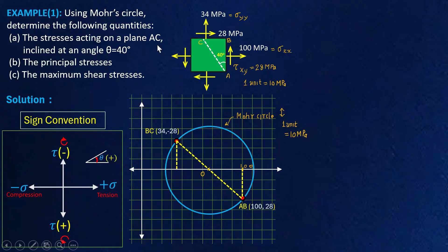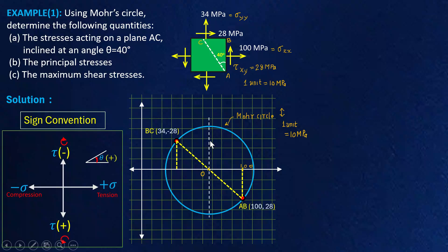If you see the question, we have to find the stresses acting on plane AC which is inclined at 40 degrees. We also need to find the principal stresses and the maximum shear stress. Let's first find the principal stresses and the maximum shear stresses. If I draw a line passing through the center of the Mohr circle and intersecting the circle at the top and bottom, the topmost point gives the maximum shear stress.